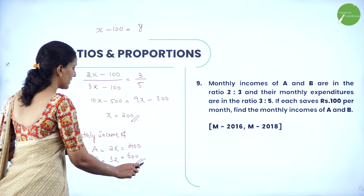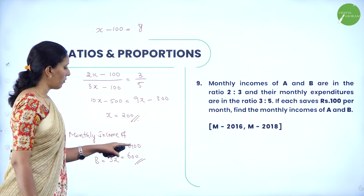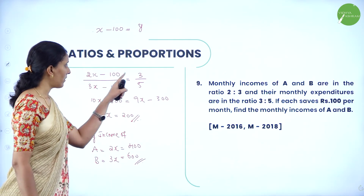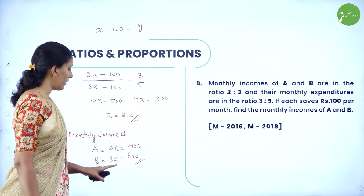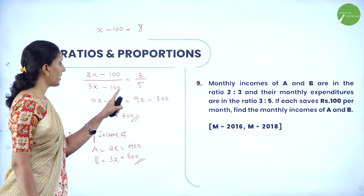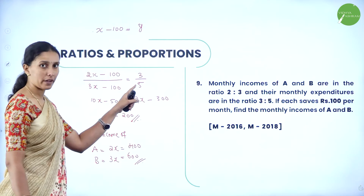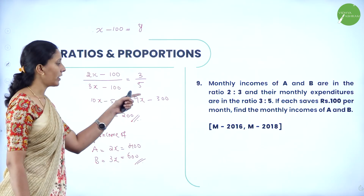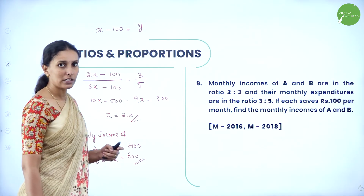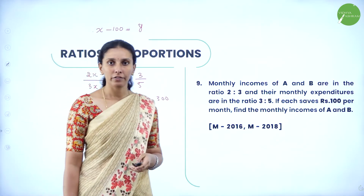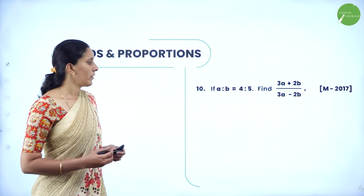We can verify: 400 minus 100 is 300, and 600 minus 100 is 500. So their expenditure ratio is 300 to 500, which is 3 by 5. This confirms the answer.